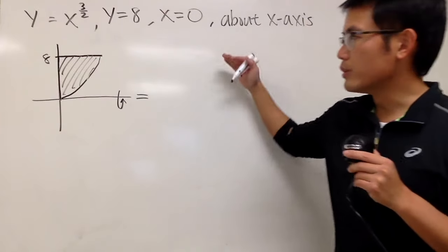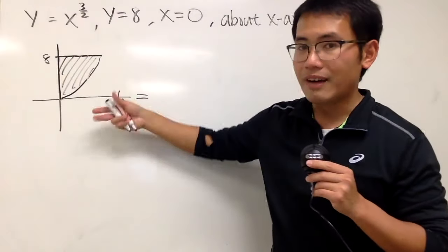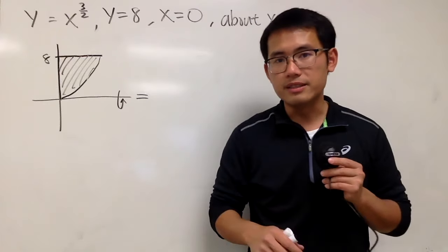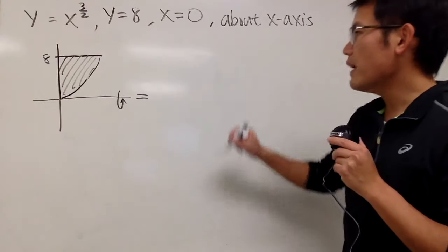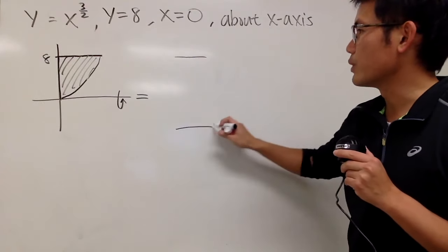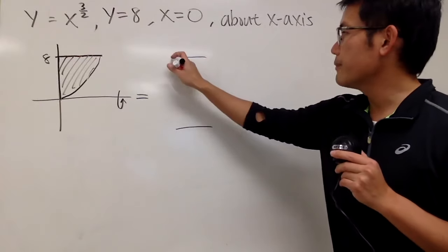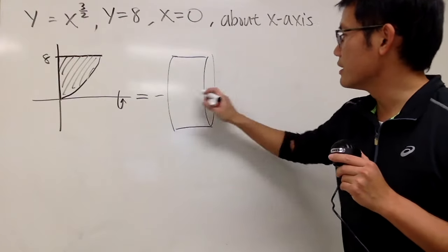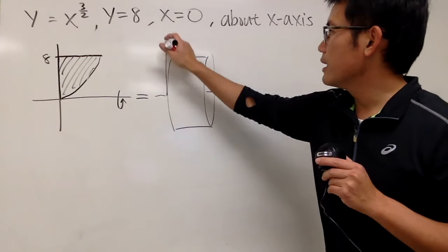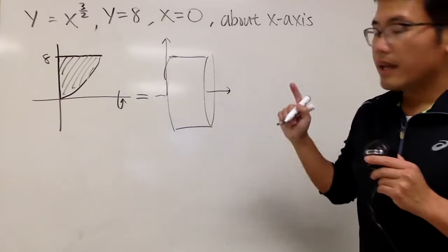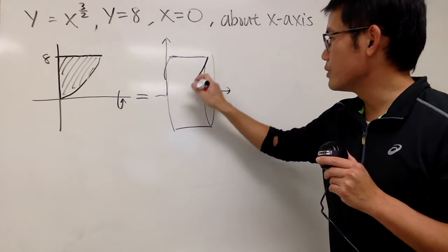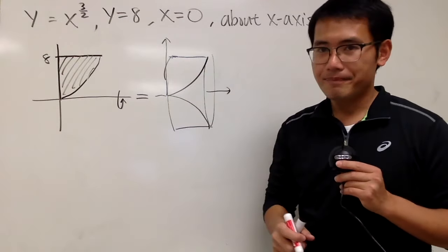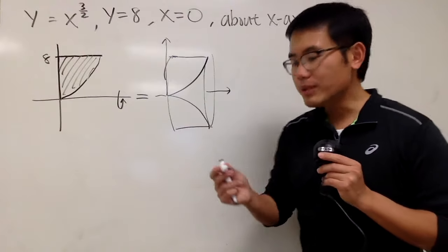If you want to use the washer method, you'd have two pictures because of the hole in the middle — you use the disk method for the first one minus the disk method for the second. But this is not so bad with the shell method, and that's exactly what we'll do. Instead of making vertical cuts, we put the shell horizontally — draw a horizontal rectangle, do the mirror image, and draw the oval at the end.